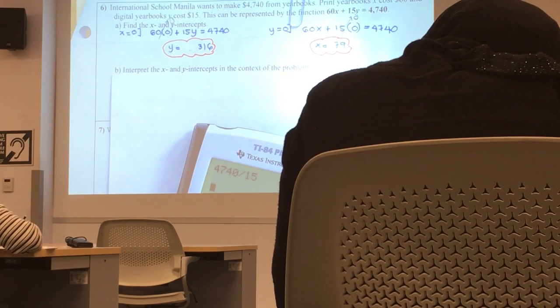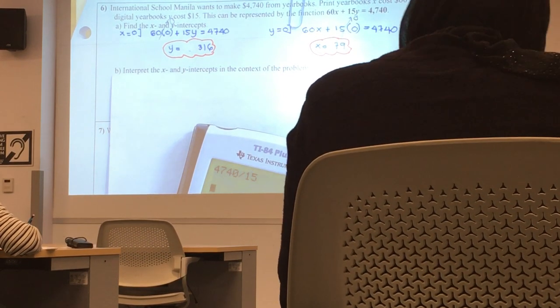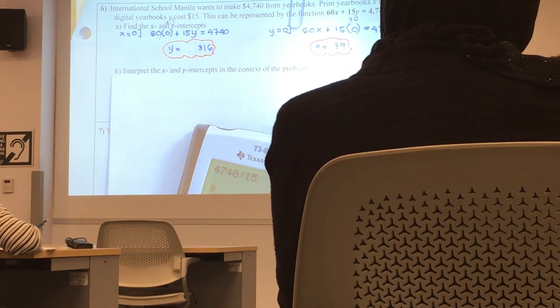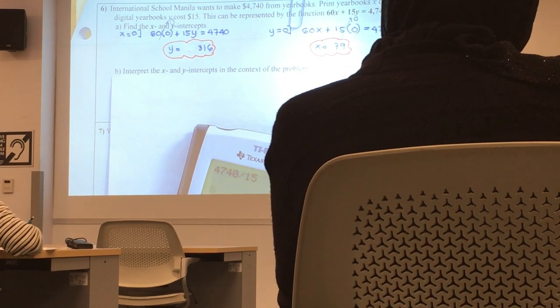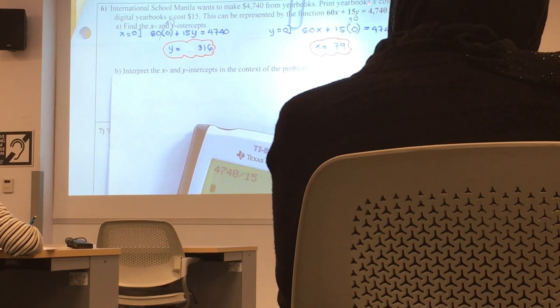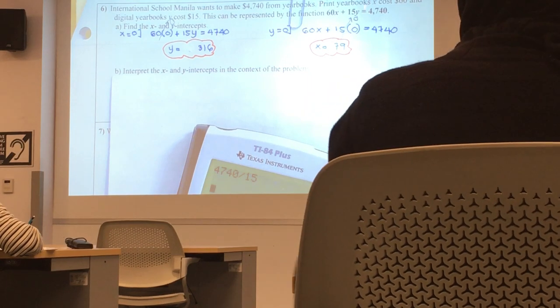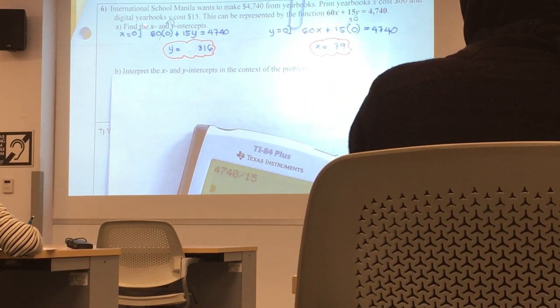Okay, let's move on now. We're going to interpret. Alright, so here, x is the cost, okay? X is the number of yearbook printed.